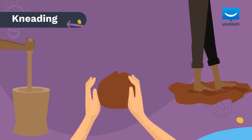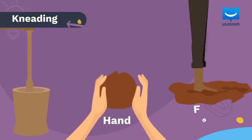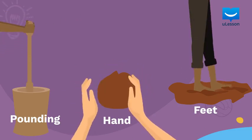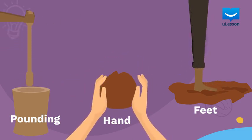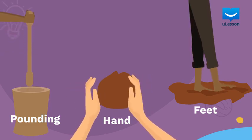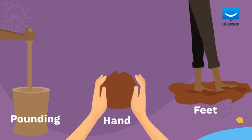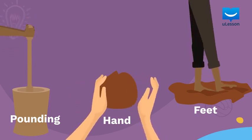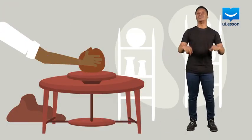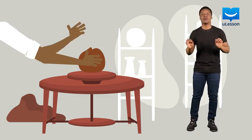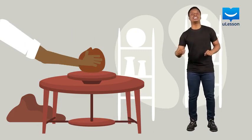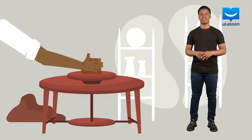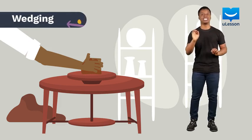Kneading can be done with the hand, feet or by pounding. But this process leaves some air bubbles trapped inside the mixture, which may affect the quality of the finished product or cause cracking when the mixture is heated. So, to remove the trapped air bubbles, the mixture is repeatedly thrown and twisted on a workbench by hand. This process is called wedging.